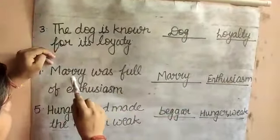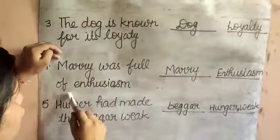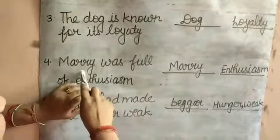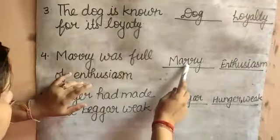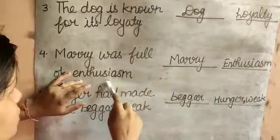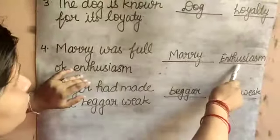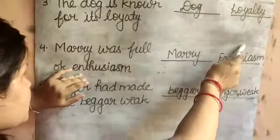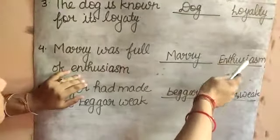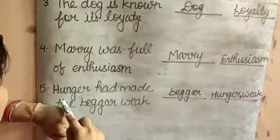'Mary was full of enthusiasm.' Mary is Concrete Noun, and enthusiasm is not visible — so enthusiasm is the Abstract Noun.